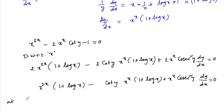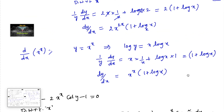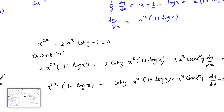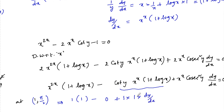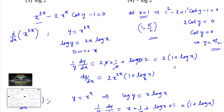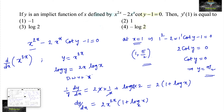Now substituting the point x equal to 1, y equal to pi by 2: log 1 is 0 so 1 plus log 1 equals 1; cot 90 is 0 so that term vanishes; x to the power of x at x=1 is 1; and cosecant 90 equals 1. So we get 1 times dy/dx equals 0, giving dy/dx equal to minus 1 at the point (1, pi/2). Therefore dy/dx at x equal to 1 is minus 1.